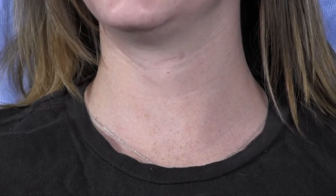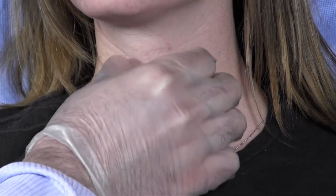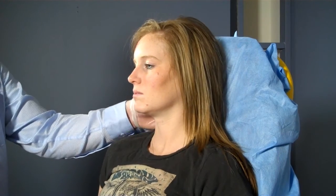Next, I move to the neck. I look for the position of the trachea, jugular venous distension, and palpate the spine for any signs of trauma or pain on palpation.